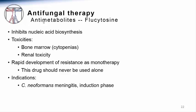Flucytosine has inhibitory effect on many Candida species and Cryptococcus. However, it should never be used alone as therapy since resistance rapidly develops. It is most commonly used in combination with amphotericin B during the induction phase of treatment of meningitis due to Cryptococcus neoformans. Detailed comparative clinical studies have definitively shown that the addition of flucytosine results in more rapid clearance of cryptococcus from the cerebrospinal fluid and improved survival.